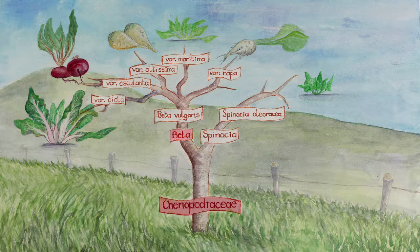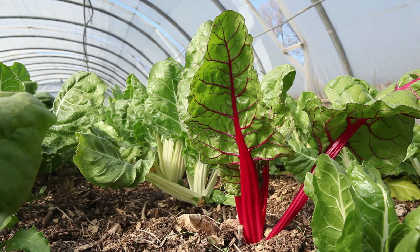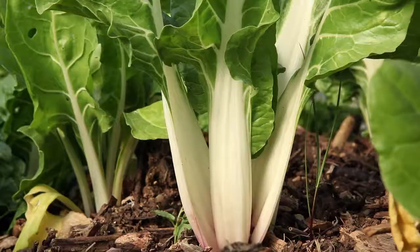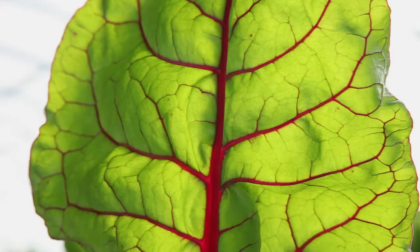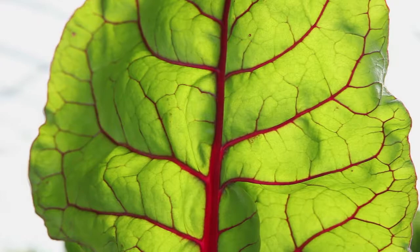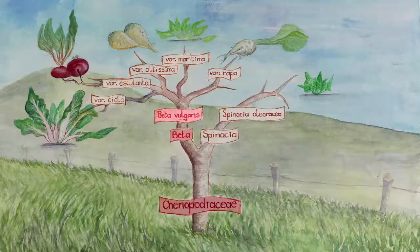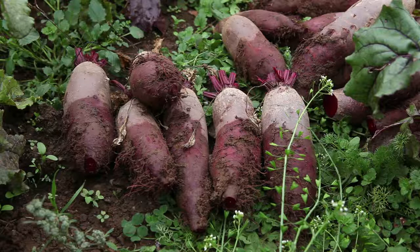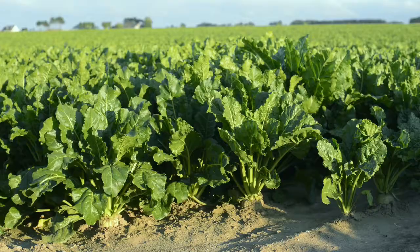Chard and beetroot belong to the Chenopodiaceae family and the Beta vulgaris species. They are biennial plants grown for their roots, stalks and leaves. There are five subspecies. Cicla includes different varieties of chard. Esculenta is made up of vegetable beetroots.